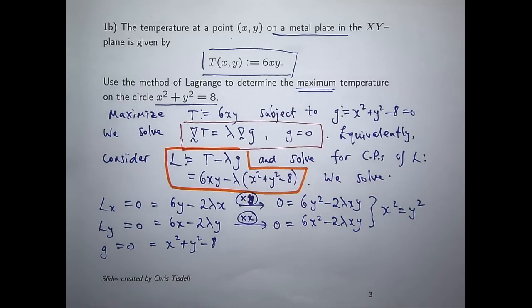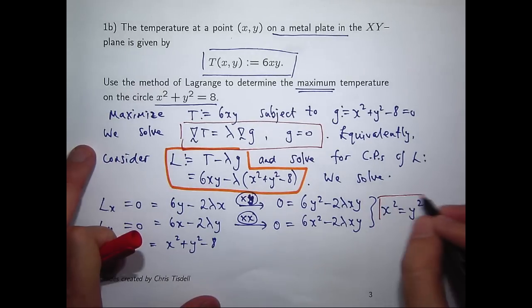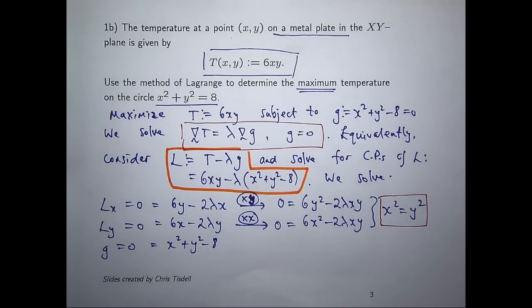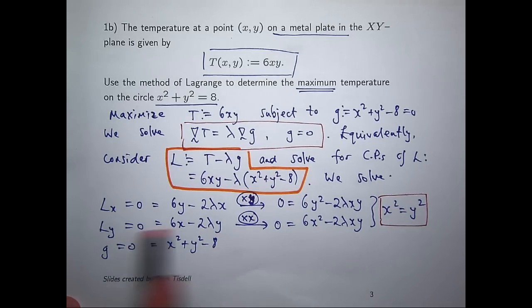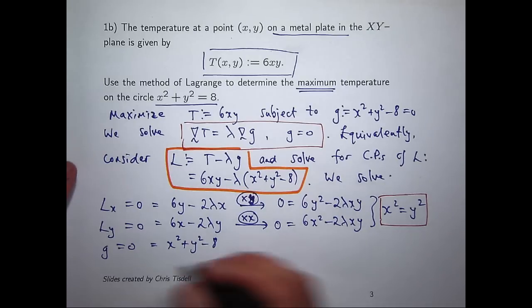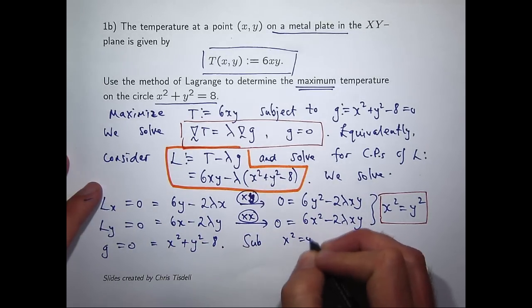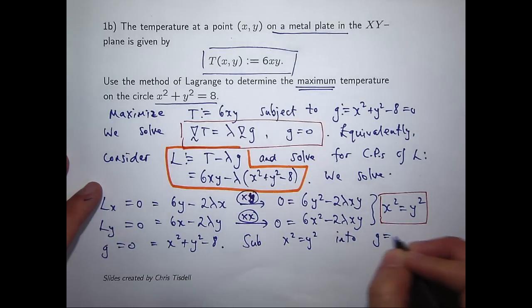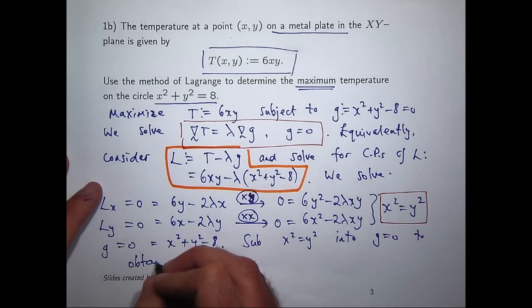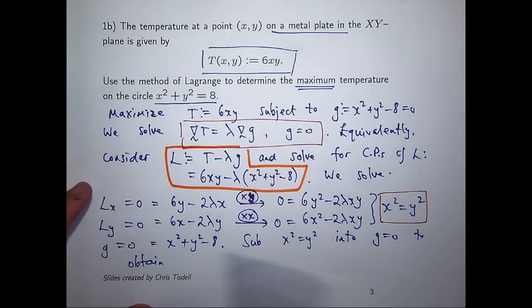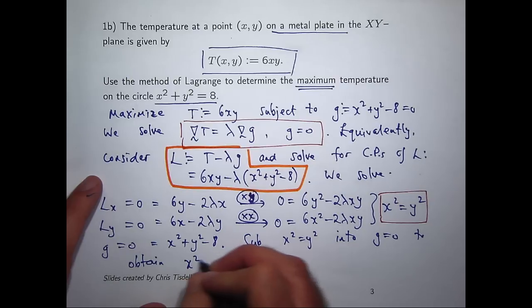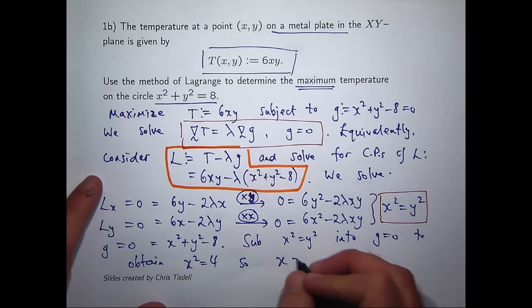What I can do now is substitute one of these into my constraint equation. So let's say I substitute for the y squared. I'll get x squared plus x squared equals 8. I can solve that for x. This will become x squared—I'll get something like x squared equals 4, so x equals plus or minus 2.